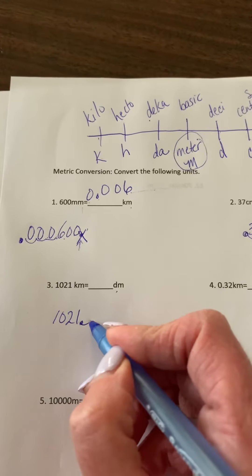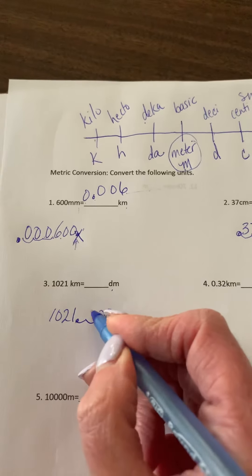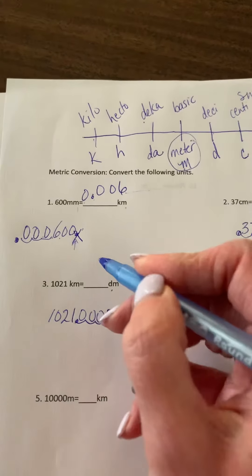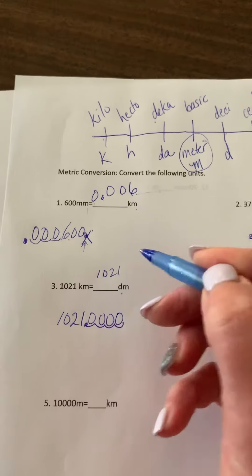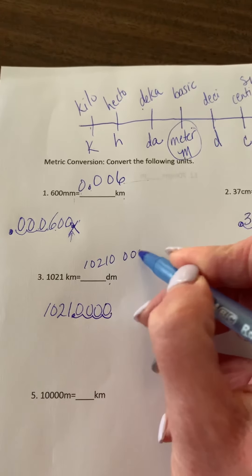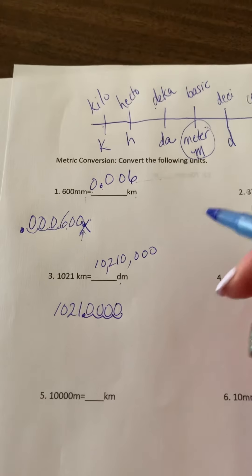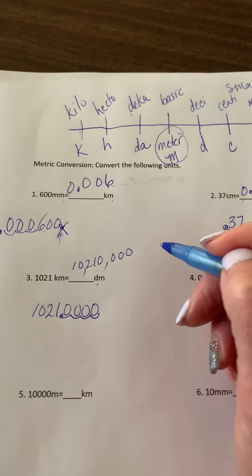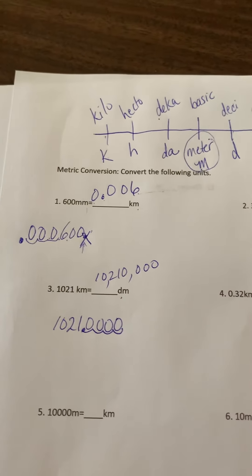So here we go. One, two, three, four. And then we fill in these zeros. And so the answer is 10,210,000 decimeters. That would be the right answer.